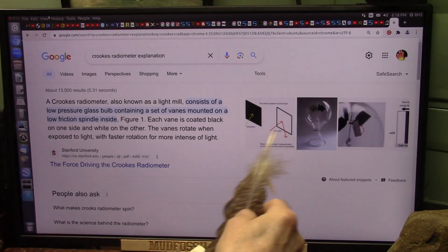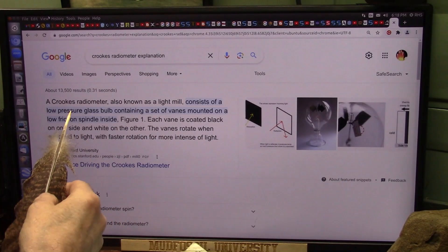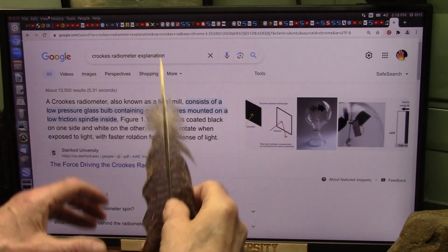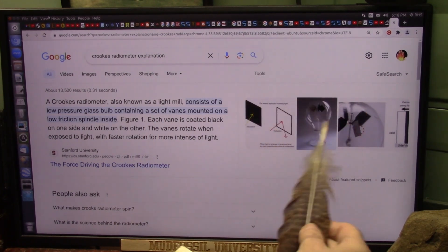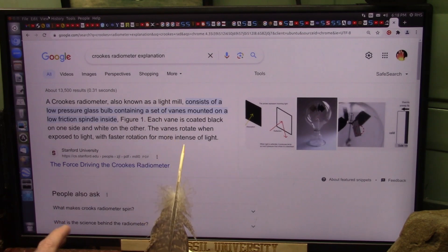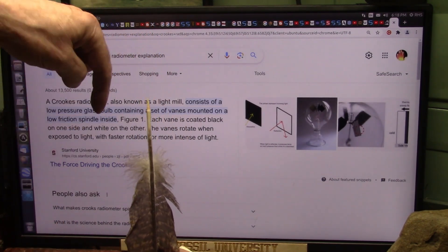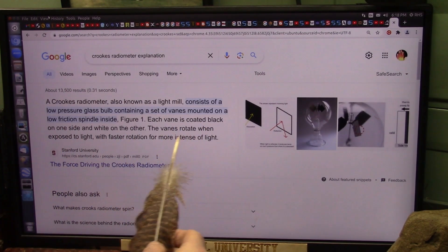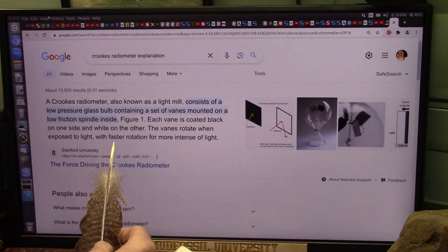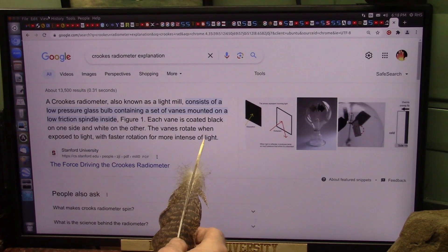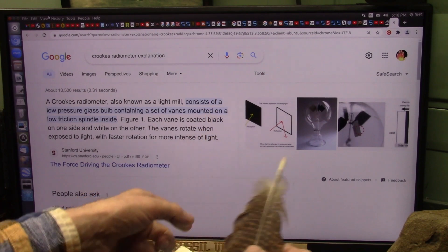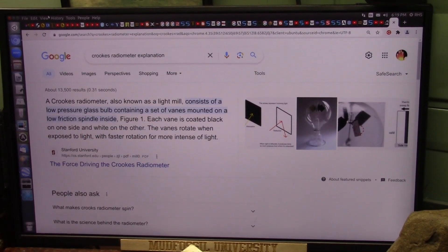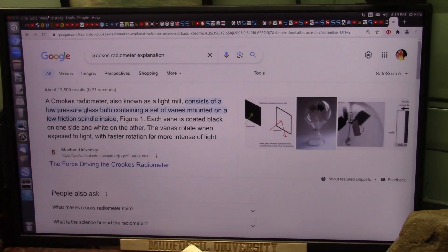This is the toy I'm talking about. They cannot resolve. A Crookes Radiometer known as a light mill consists of a low-pressure glass bulb containing a set of veins mounted on a very frictionless spindle. So the veins spin around the spindle. Each vein is coated black on one side and white on the other. The veins rotate when exposed to light with faster rotation for more intense light. And guess what? Cold makes the spin reverse. Figure that one out. I love you all. This is going to be fun. Crookes Radiometer. Try to figure that one out.